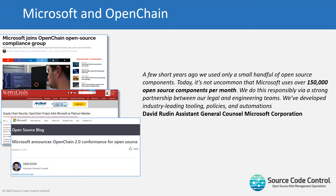Microsoft is a platinum member of OpenChain and did a lot of the work to move it from just a project into being an ISO standard. Microsoft themselves have announced conformance to OpenChain and take it very seriously. Microsoft uses over 150,000 open source components per month in their software development, and they take their obligations around licensing very seriously — which is why they are supportive of OpenChain. It's quite natural for their ISV community to be following suit.